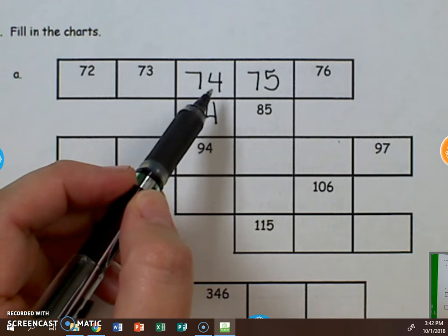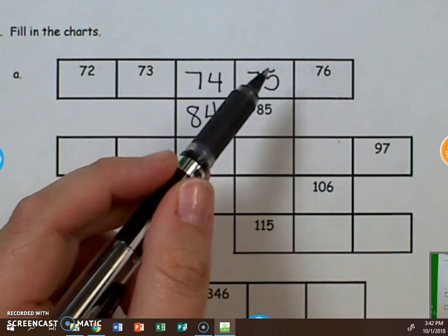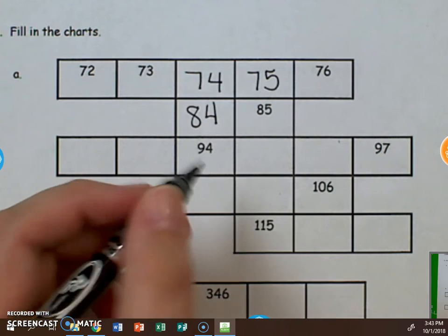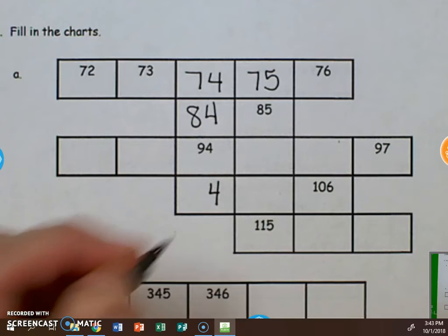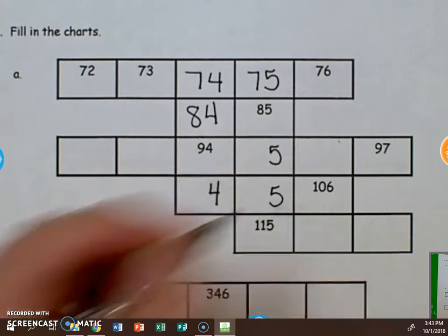Now we can see a trend that we have ones here, here, and here that are all fours. We have five here, here, and here that are all fives. So the ones place must be a 4 here. The ones place must be a 5 here and here.